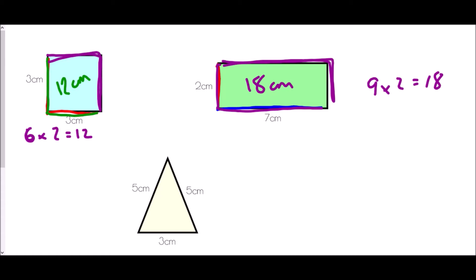Finally we have an isosceles triangle — it's isosceles because two sides are the same length. Walking around this shape I would travel five, ten, and thirteen, simply adding all the sides together. So the perimeter is thirteen centimeters.